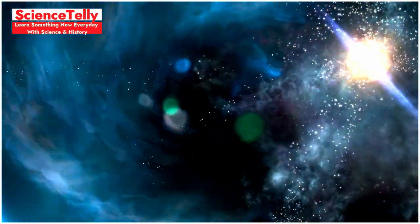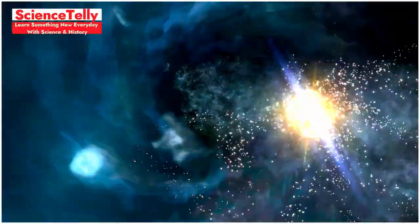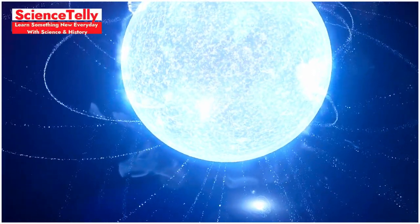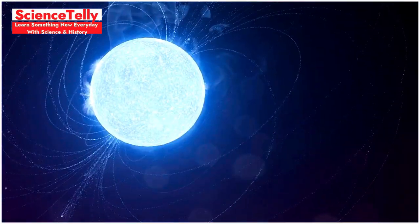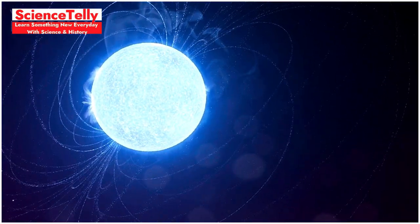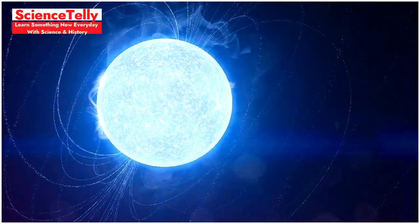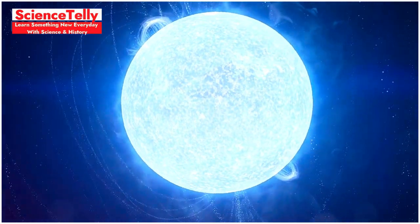If that was not enough, neutron stars also boast the strongest magnetic fields in the universe. A type of neutron star known as a magnetar has a magnetic field that is a trillion times stronger than Earth's. If a magnetar were located just 1,000 kilometers away from our planet, its magnetic field would wipe the data off every credit card on Earth and even distort the atomic structure of our bodies.